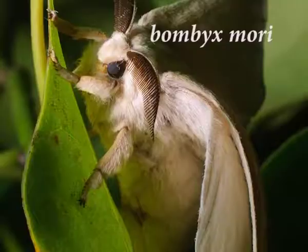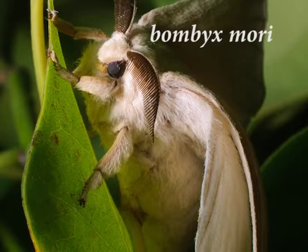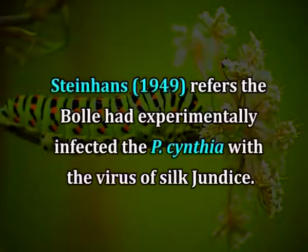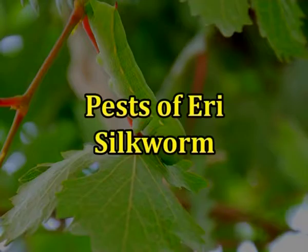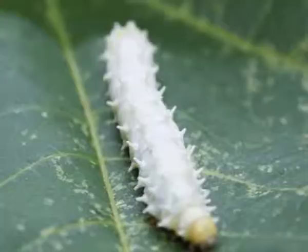The body of the moth frequently revealed the presence of abundant polyhedral corpuscles of a nature identical to Bombyx mori reported by Wollaston in 1940. Hence, it is considered that the eri worm is a healthy carrier of the virus. Steinhaus in 1949 refers that Bolle had experimentally infected P. cynthia with the virus of silk jaundice. It was also observed in the F2 generation of the cross of P. cynthia and P. ricini that some worms died of grasserie while the others developed normally.